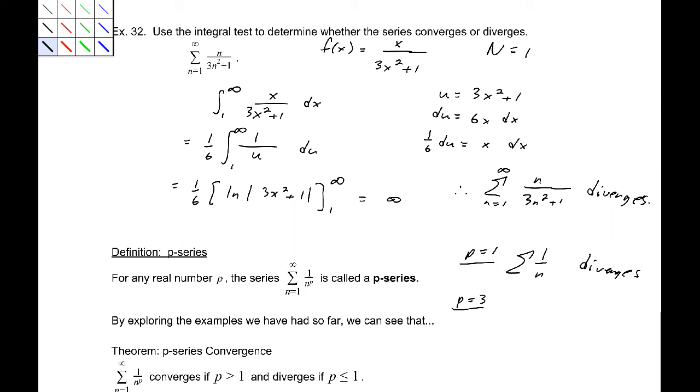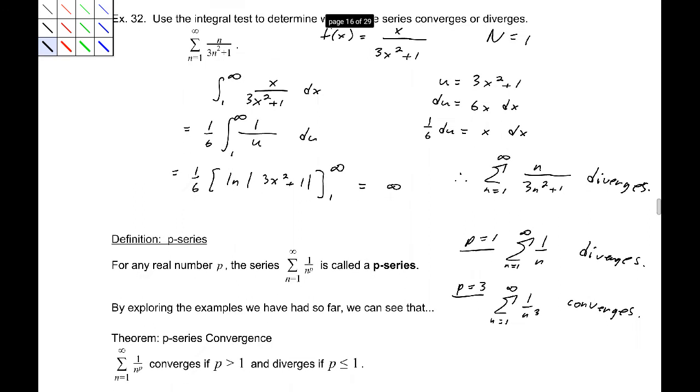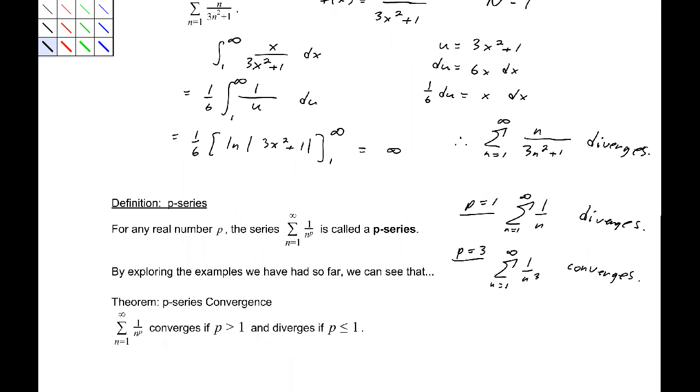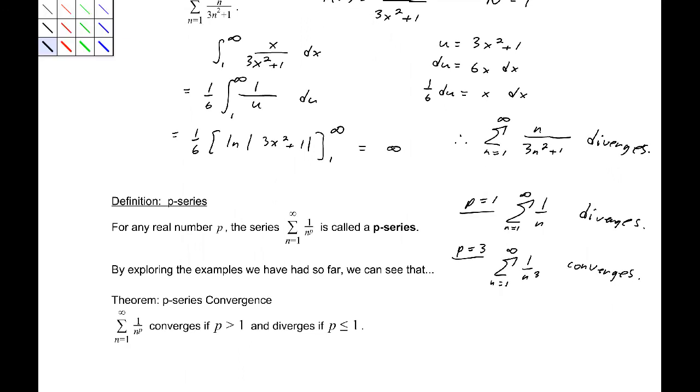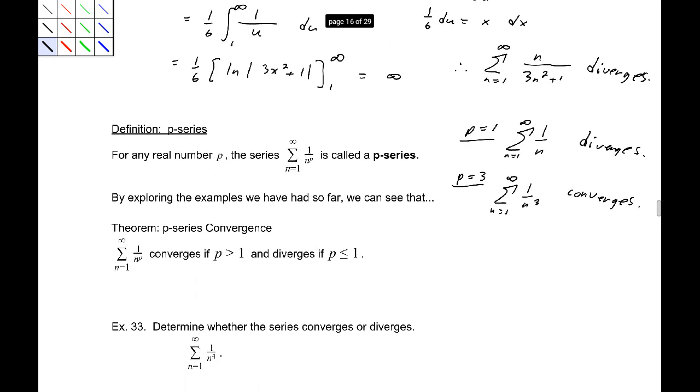p equals 3 we looked at, that would be the sum 1 over n cubed. That converged. And we showed that by using the integral test. And if you try a couple more values, you might convince yourself that this is true. If this converges, if p is greater than 1 and diverges if it's less than or equal to 1. Take a little minute to convince yourself of that fact and then hold on to that fact and use it often.